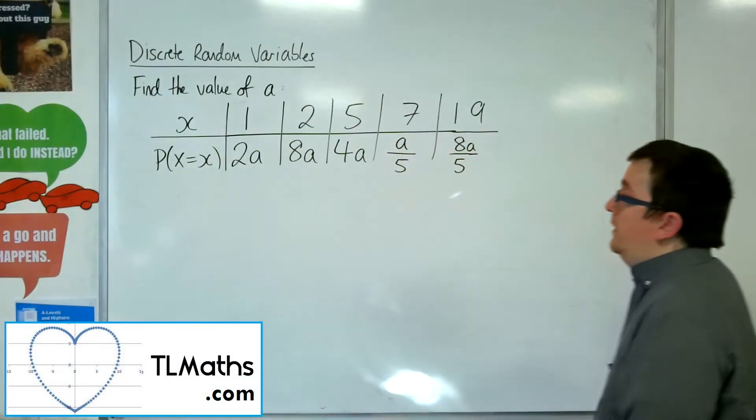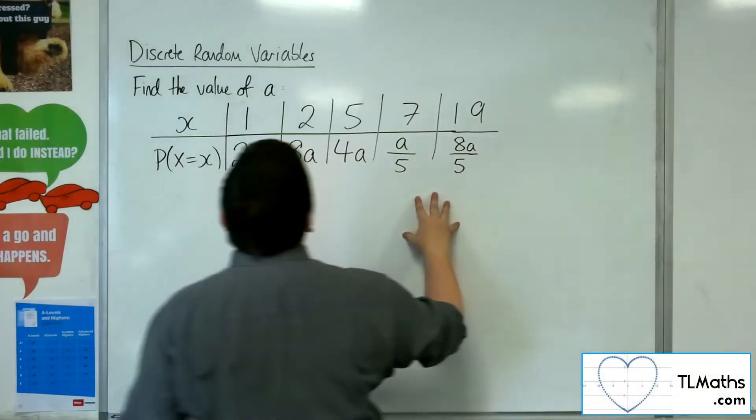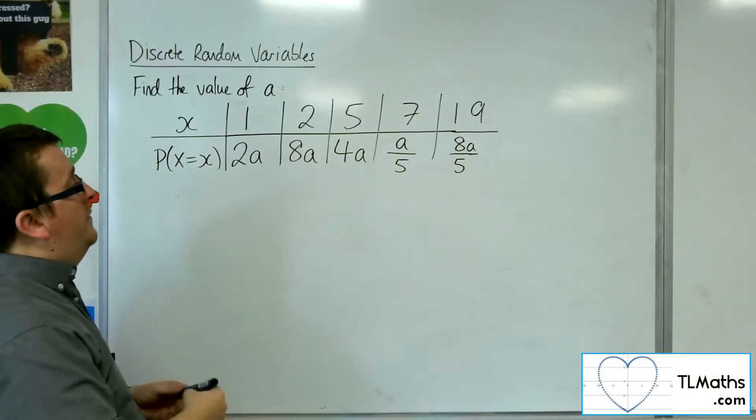OK, so in this third example, we've got these five probabilities. We know they've got to add up to one. We've got to find the value of a.